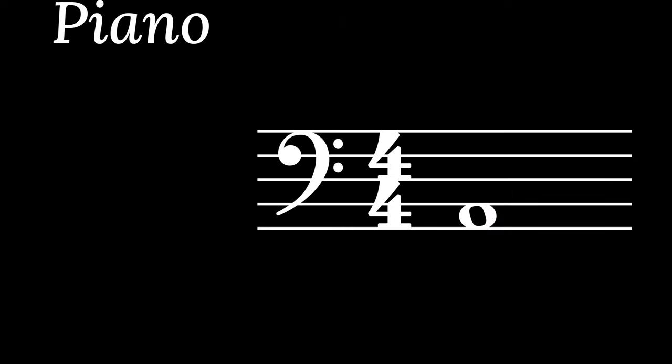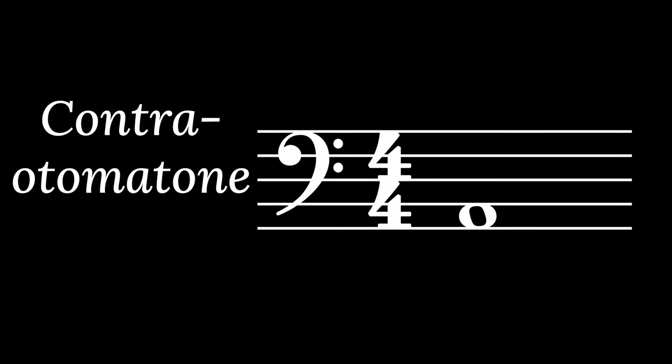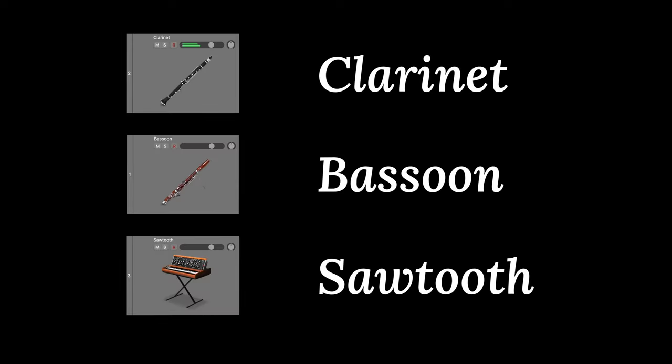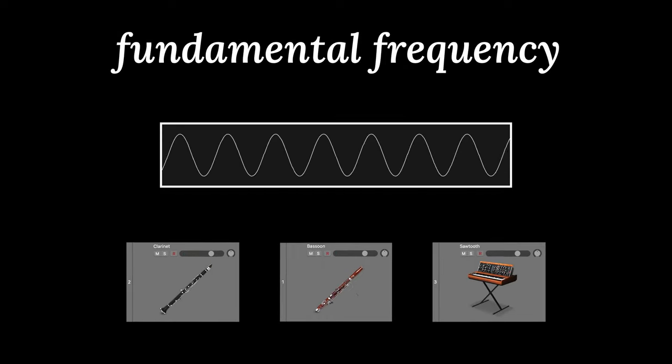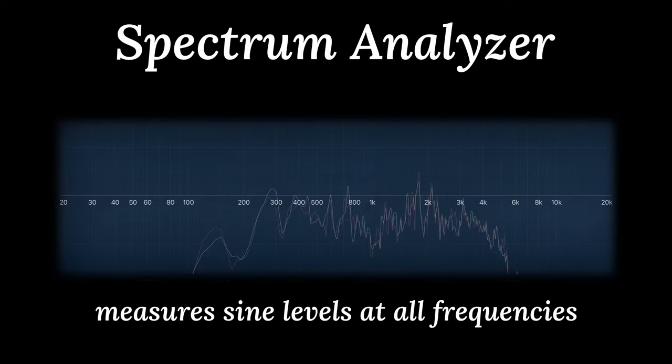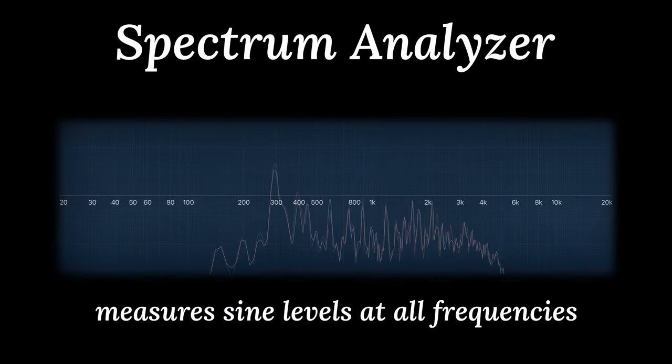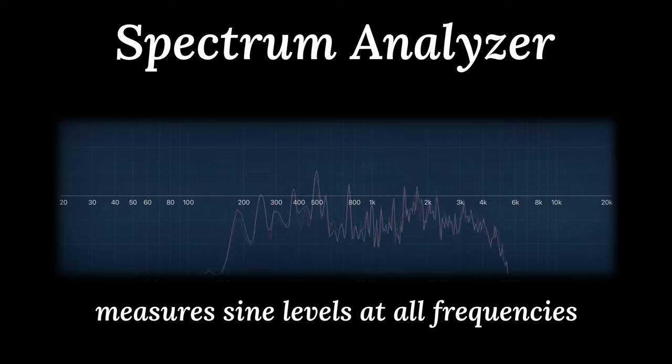But we still recognize it as a low A. It feels like a paradox that you can play a low A on multiple instruments, and it sounds similar enough to be the same note, but different enough to be recognized as a clarinet, or a bassoon, or a sawtooth wave. Common to all these sounds is a fundamental frequency, a sine wave at 220 hertz. Unique to each instrument is a stack of sine waves over the fundamental that grow, shift, and decay over time. We call these overtones.